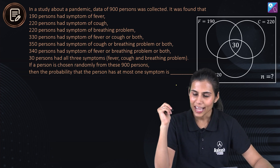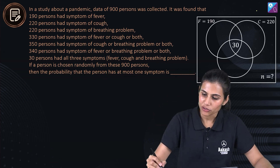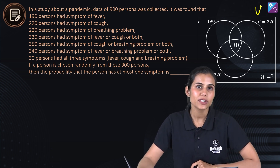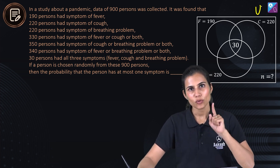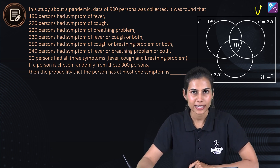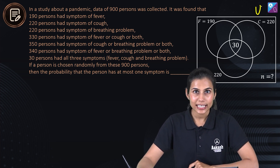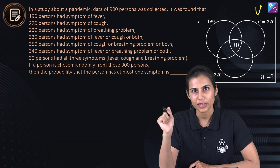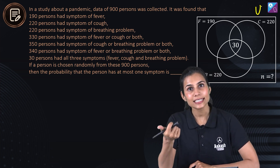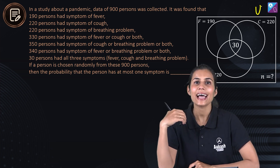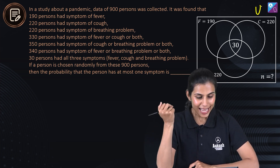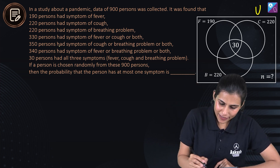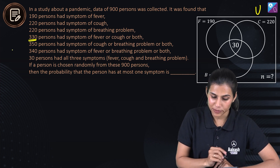The best way is to convert this entire setup into a Venn diagram. Here I have a rectangle representing the universal set, and within it three circles — one each for fever (F), cough (C), and breathing problem (B). You can see 30 is written in the region common to all three, representing that 30 members have fever as well as cough as well as breathing problems.